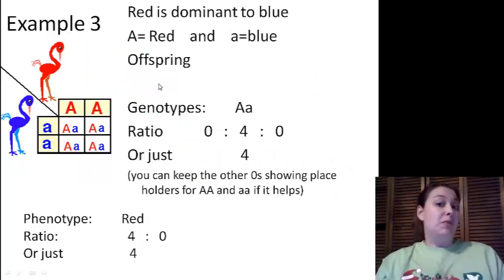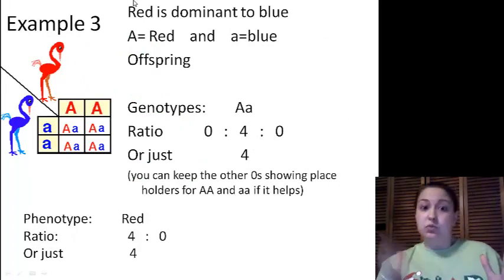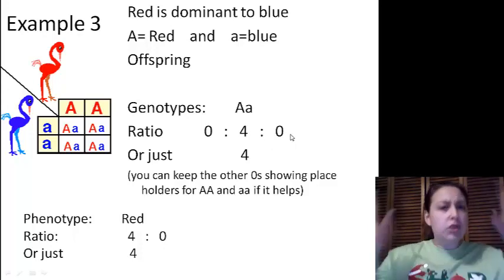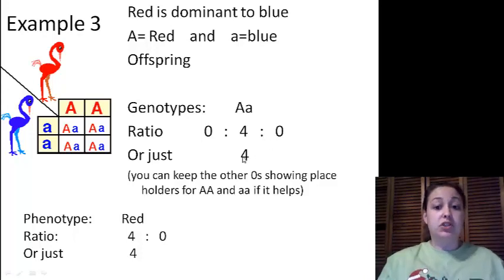Let's do one more. Red is dominant to blue. This time they're using A's. Our genotypes for our offspring is we see that we have all big A little a's. The ratio, you could put a zero to four to zero, or you can leave those zeros off, which just make it a four.